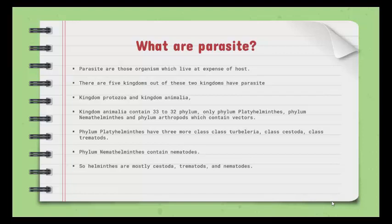Phylum Platyhelminthes contains three classes. One class contains Digenea, which includes Planaria — a free-living organism and not a parasite — so this class has been excluded from the parasites. The other two classes contain a large amount of parasites within them.